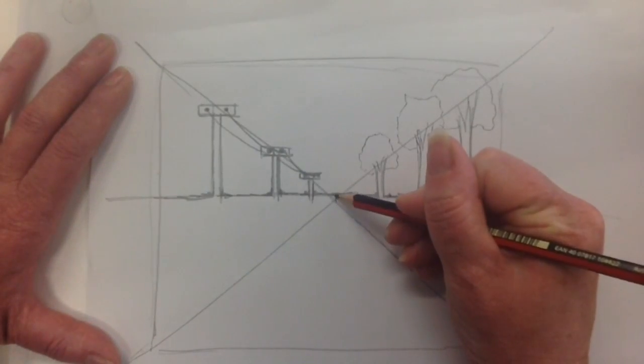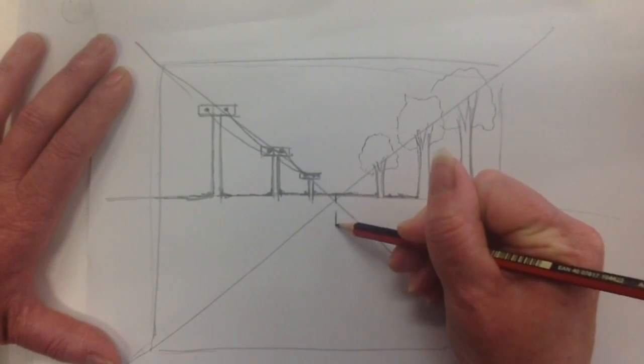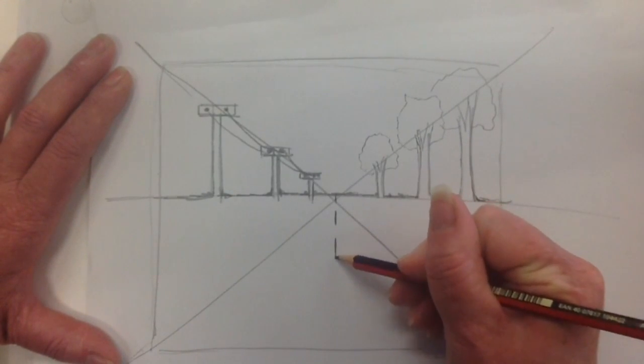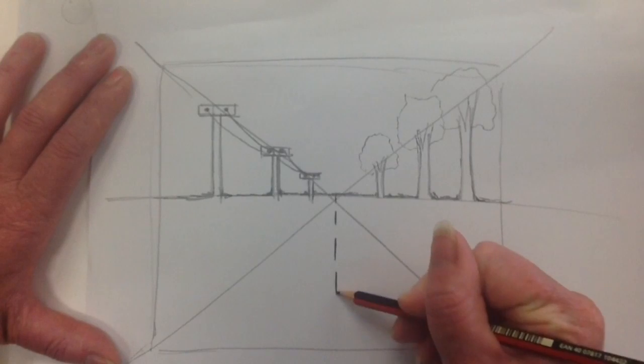That horizon line, that line going across where the horizon is. Make this into a road in the middle.